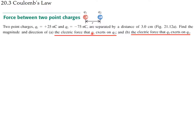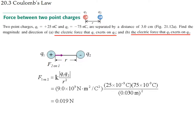In both cases the magnitude is F = K·|q1|·|q2| / r², with the distance converted to meters. So we compute 9×10⁹ × 25×10⁻⁹ × 75×10⁻⁹, using absolute values (dropping the minus sign), divided by (0.03)². Note the distance must be in meters.